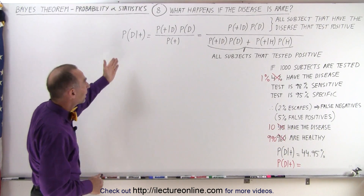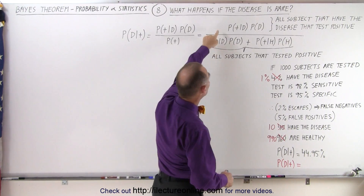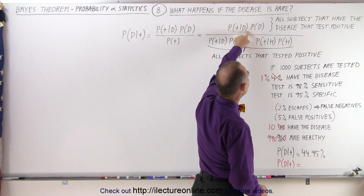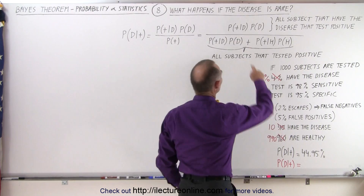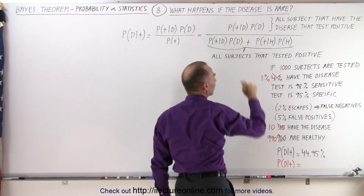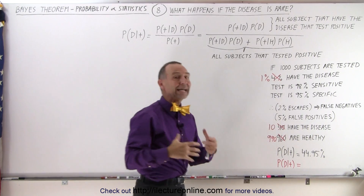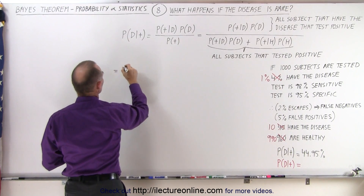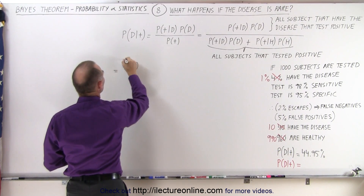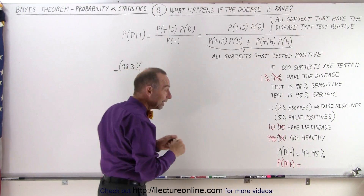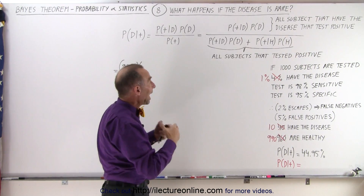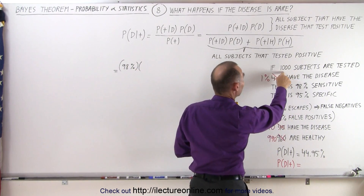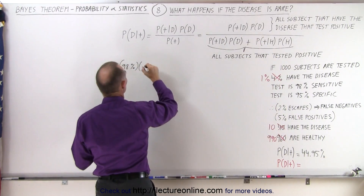Let's go ahead and calculate what we need to calculate. For the numerator, we have to multiply the probability that the person will test positive if they have the disease times the probability that they have the disease. The probability that they test positive if they have the disease is the sensitivity of the test — 98% of people with the disease will test positive. So the numerator is 98%, multiplied by the probability that the subject has the disease, which now drops to just 1%.